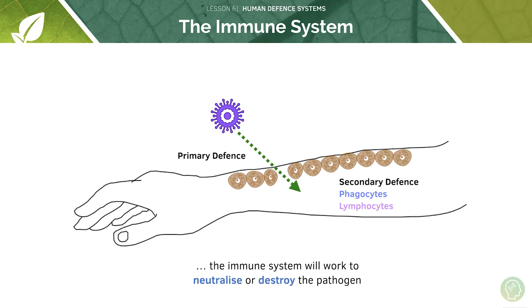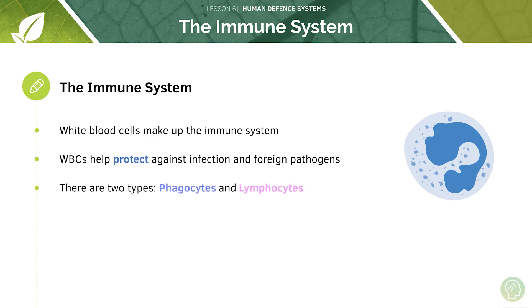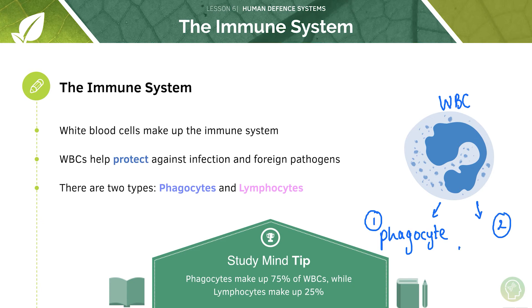The immune system is made up of cells called white blood cells, which help protect against infection and foreign pathogens. There are two types: phagocytes and lymphocytes. Phagocytes make up the majority of the white blood cell population, whereas lymphocytes make up about a quarter. The key points from this slide are that white blood cells make up the immune system, and that there are two main types — phagocytes and lymphocytes.